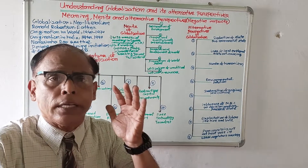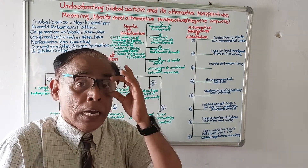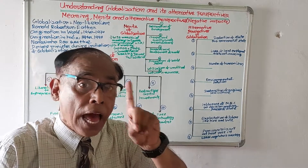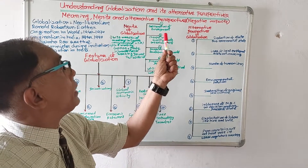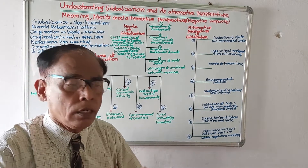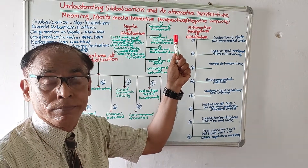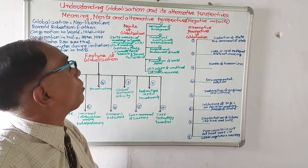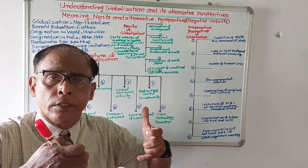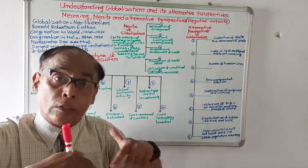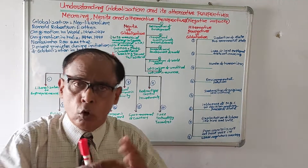Now we understand what globalization is in simple and appropriate language. Let us see what benefits globalization has. We will discuss five benefits. Number one: generation of employment — in globalization more and more factories will be established, so people will get jobs. Number two: cheaper and quality commodities for consumers — in globalization there will be competition among entrepreneurs, and as a consequence cheaper and quality commodities will be available to consumers.